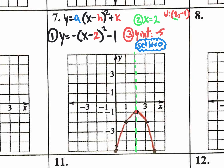The fourth and final thing they ask for on the instructions is to state the range. The range is your y values, and clearly it's y is less than or equal to the y value of your vertex — which is negative one — because it's opening down.